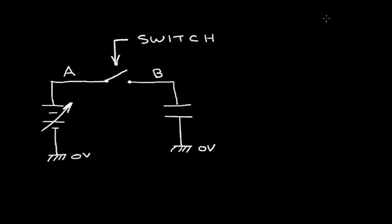In this video, I want to explain the operation of the CMOS switch. Here I have a mechanical switch. When I close the switch, I'm going to connect the voltage at point A over to the capacitor at point B.